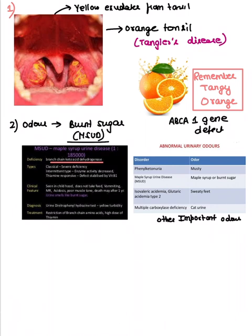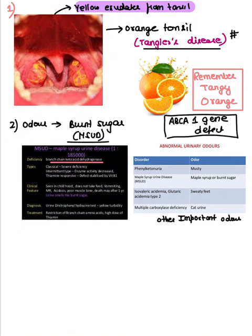The first question gave a history of yellow exudates from the tonsil. When you talk about yellow exudates, that is most likely a case of Tangier disease, which was in the options. Tangier disease is due to an ABCA1 gene defect. To remember this, think of the tangy orange flavor — orange/yellow color means Tangier disease.